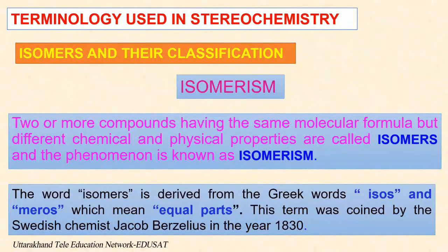The branch of chemistry which deals with three-dimensional structure of molecules and their effect on physical and chemical properties is known as stereochemistry. Terminology used in stereochemistry: first is isomers and their classification.